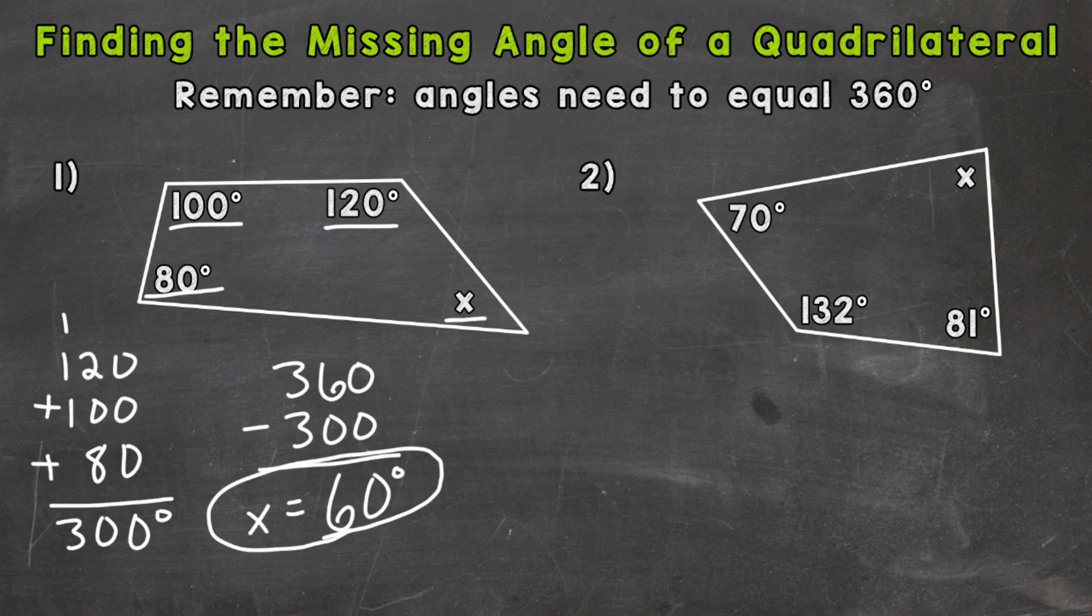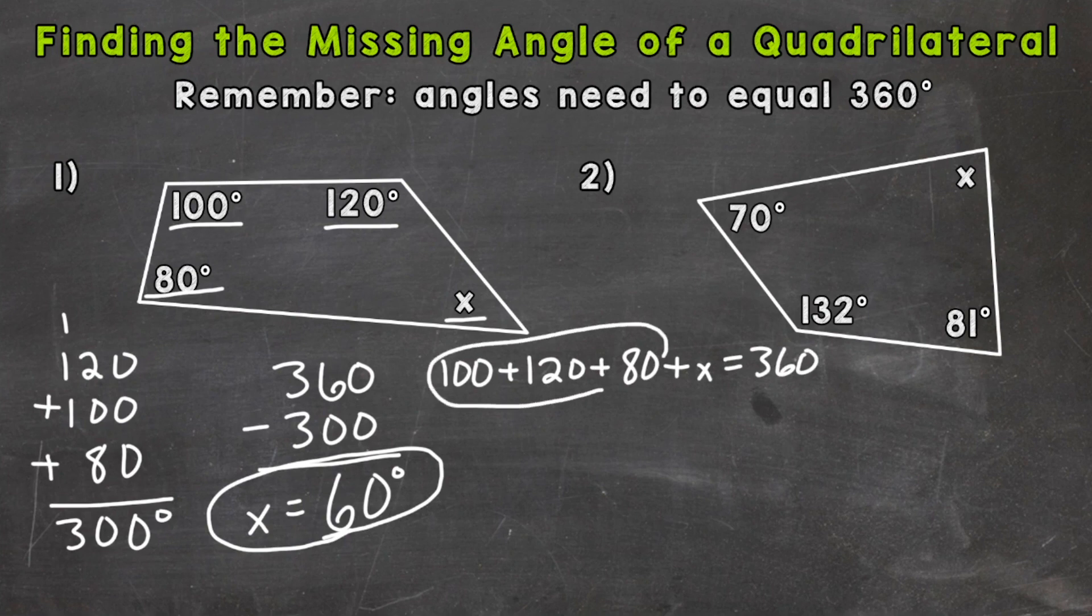And it works because if we take a look at it algebraically, if we do 100 degrees plus 120 degrees plus 80 degrees plus x, it will have to give us 360 degrees. So what we do, we isolate our variable. We add all of these up and subtract them from 360, and that gives us what x equals.